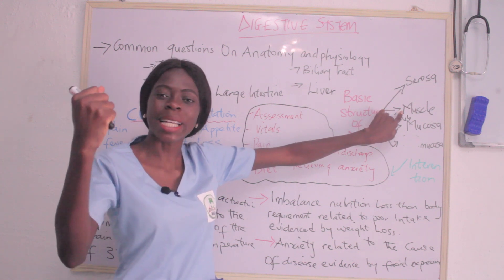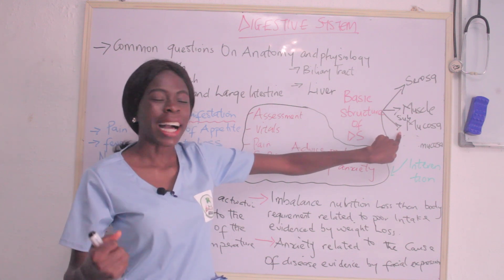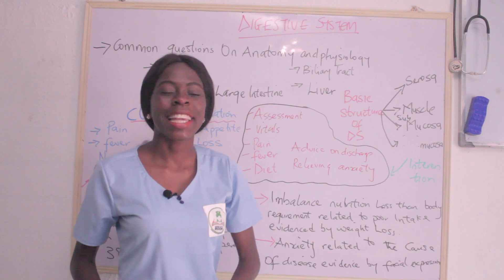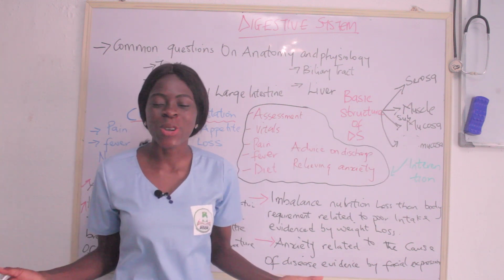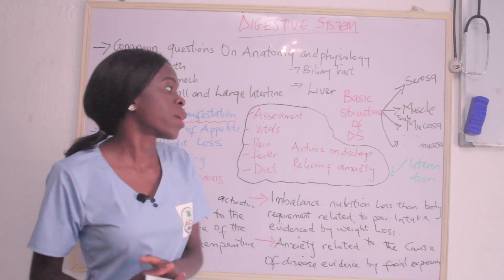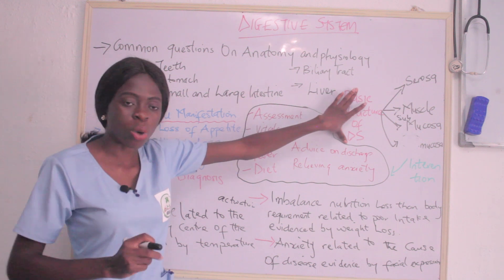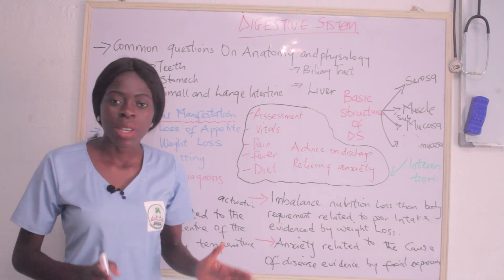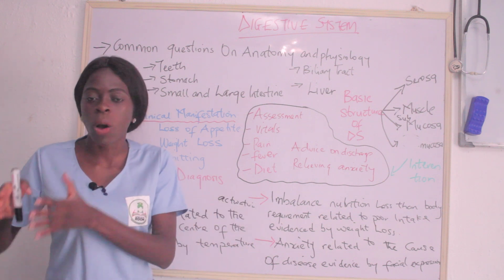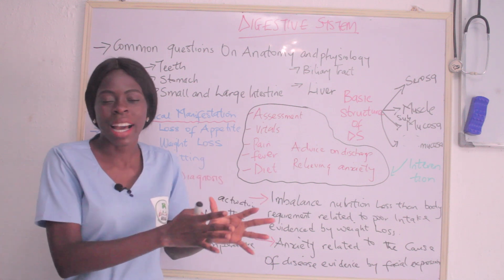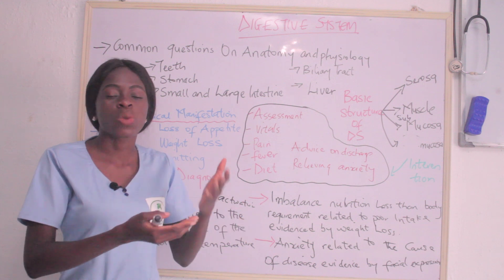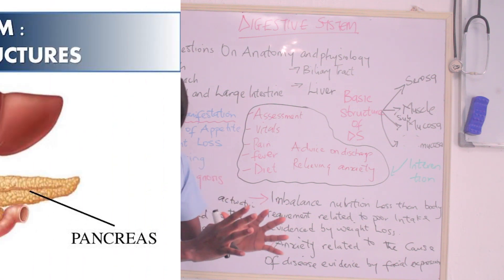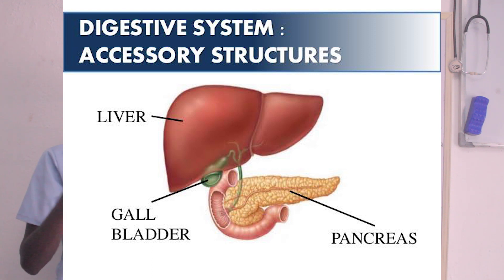Then there is the submucosal layer, and the innermost layer is the mucosal layer. The submucosal layer acts as a middleman, merging the muscularis and mucosal layers. In that submucosal layer you can find arteries, nerves, and veins. That is the basic structure of the digestive system. Also note that the digestive system is made up of the alimentary canal and the accessory organs. The alimentary canal includes the mouth, oesophagus, stomach, and so on, while the accessory organs pour secretions into the alimentary canal through a duct — for example, the biliary tract.